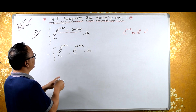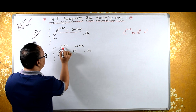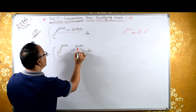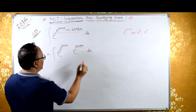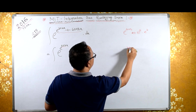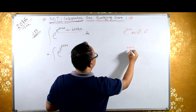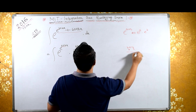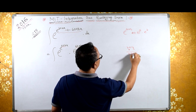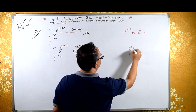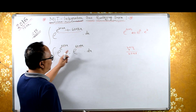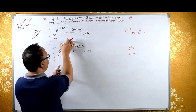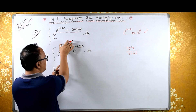Now, 2016 — can you find any relation between 2016 and 6048? Here, 2016 into 3 is 6048. Therefore, 6048 is 3 times 2016.